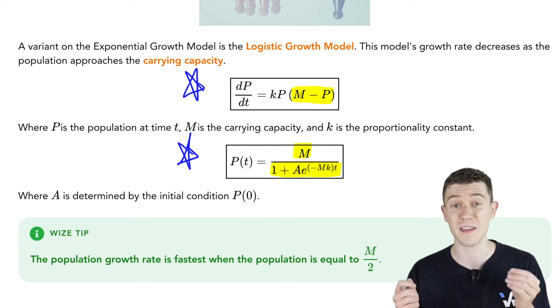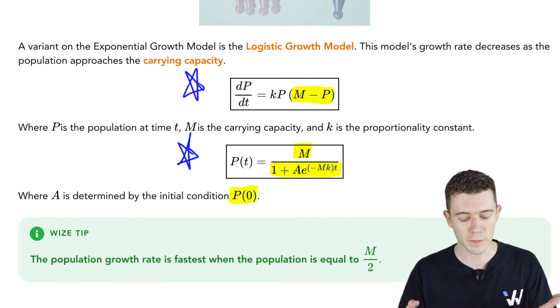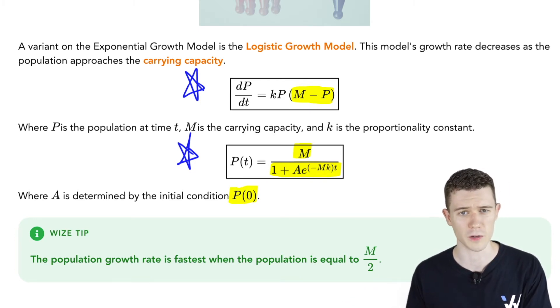Here, A is determined by the initial population, P(0). And you can find A by plugging this in and solving, along with other information in the problem.